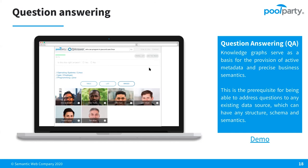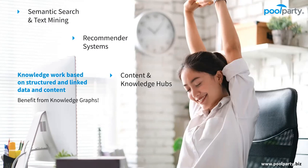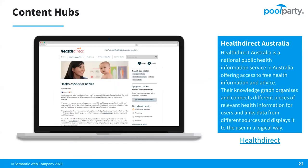Knowledge work based on structured and linked data and content means we get semantic search at our hands, better text mining, recommender systems which push data and information to our desktops. We no longer have to look around — the systems are aware of our situation, they are context aware. The content and knowledge hubs will help us save time and see business objects in a 360-degree view, so we can look at things in a holistic way. Enterprise search, deep text analytics, content hubs — those are the typical applications. You can all try them out on your own; they are all live on the web.